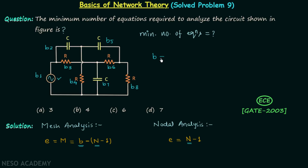The number of branches is equal to 8. Now we find the principal nodes — a principal node is the common point of connection where more than two elements are connected. This is principal node N1, where 3 elements are connected. Similarly, nodes N2 and N3 — this wire has no element so those two points combine into a single node N3. This is node N4 and this is node N5.